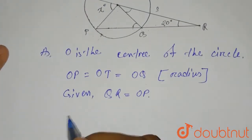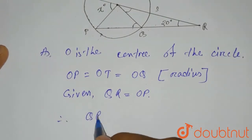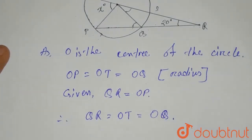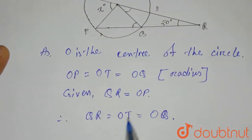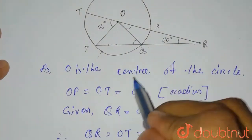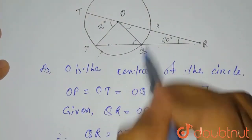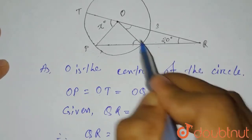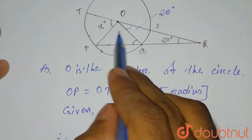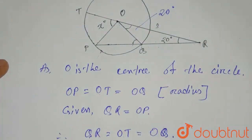Therefore QR equals OT equals OQ, since OP equals OT and OQ. So in place of OP we can write OT and OQ. Now QR equals OQ. Look at this triangle — QR equals OQ, so this triangle has two sides equal. That means if this angle is 20 degrees, this is also 20 degrees, because triangle QOR is an isosceles triangle.